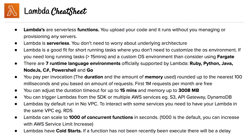There are seven runtime language environments officially supported by Lambda: Ruby, Python, Java, Node.js, C#, PowerShell, and Go.